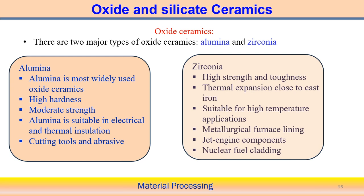Zirconia is another kind of ceramic oxide. It has high strength and toughness. Its thermal expansion is close to that of cast iron. Zirconia is also suitable for very high temperature applications. For example, metallurgical furnace lining can be made of zirconia. Zirconia can be used in jet engine components, nuclear fuel cladding, and making cutting tools.